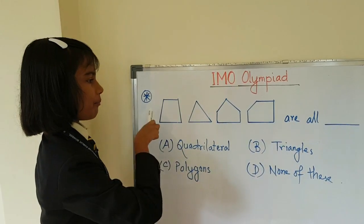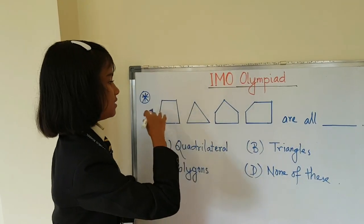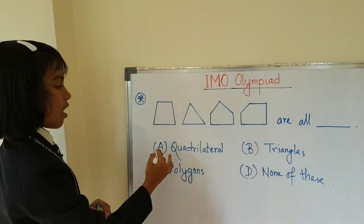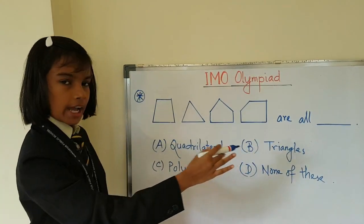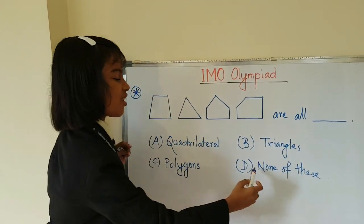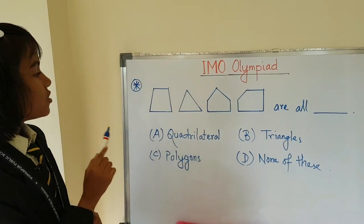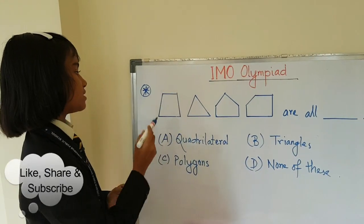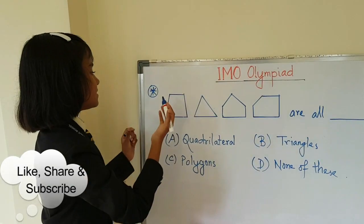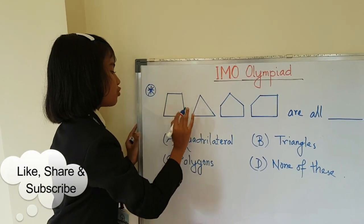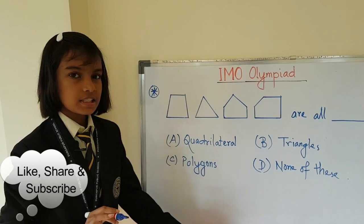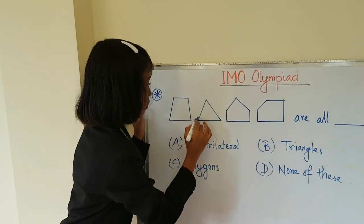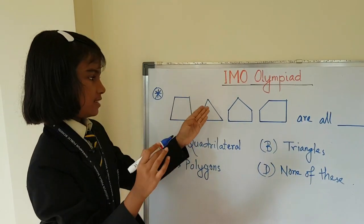Let's solve this problem. These shapes are all — what are these shapes? Quadrilaterals, triangles, polygons, or none of these? First we have to find what these shapes are, so let's count the sides. One, two, three, four — that means this is a quadrilateral, it has four sides. Then one, two, three — this is a triangle.